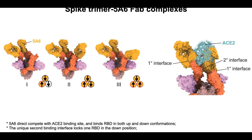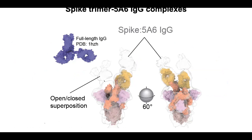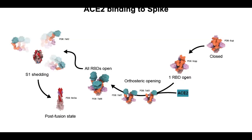Furthermore, Charlie showed that Fab binding and IgG binding give different results. In this way, looking at 5A6 in the structure of the full IgG — even though the resolution isn't as high — we can still interpret it to show that the IgG binding presents in a very stable configuration, locking one RBD in the upper position and one in the down position. Putting all of these together, we can try to understand what happens with all this Fab binding to the spike.